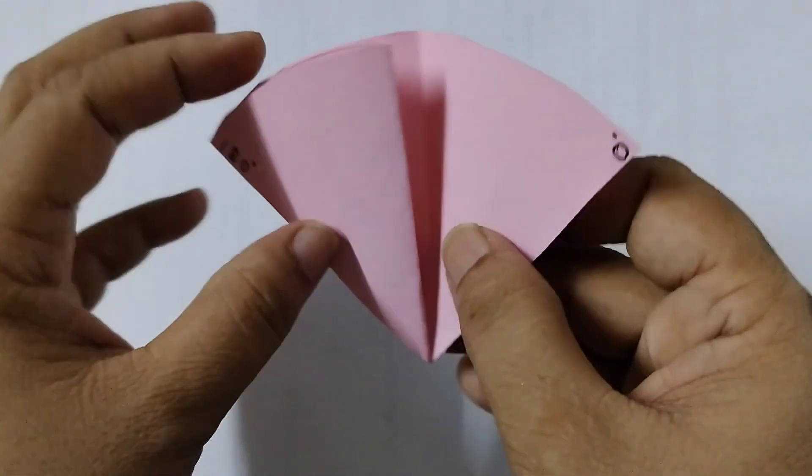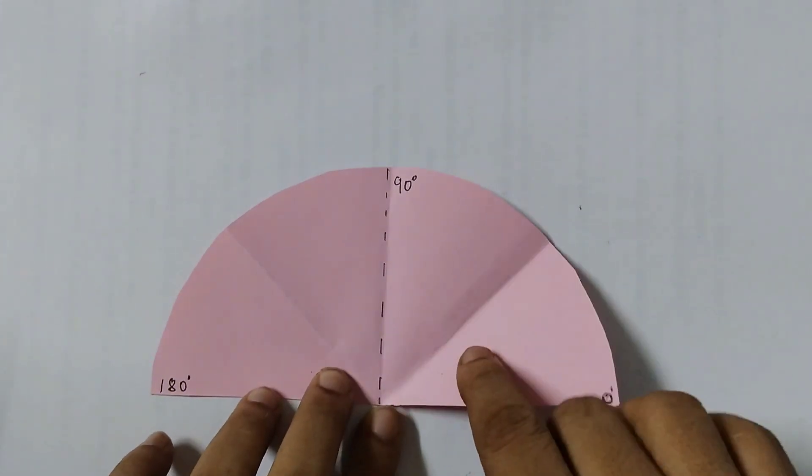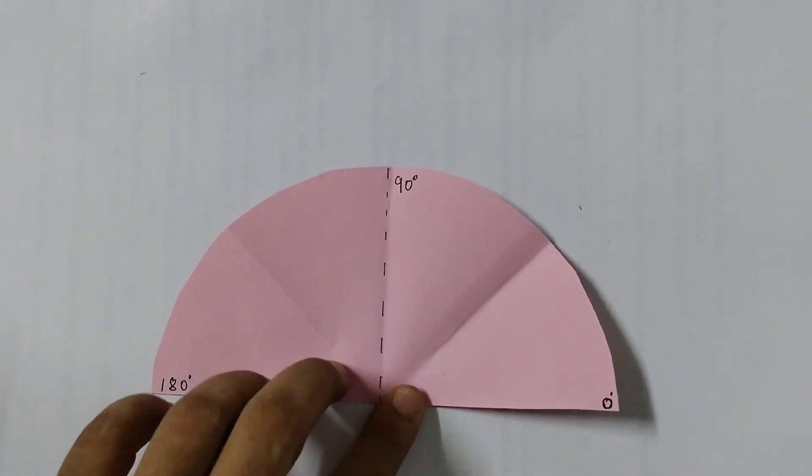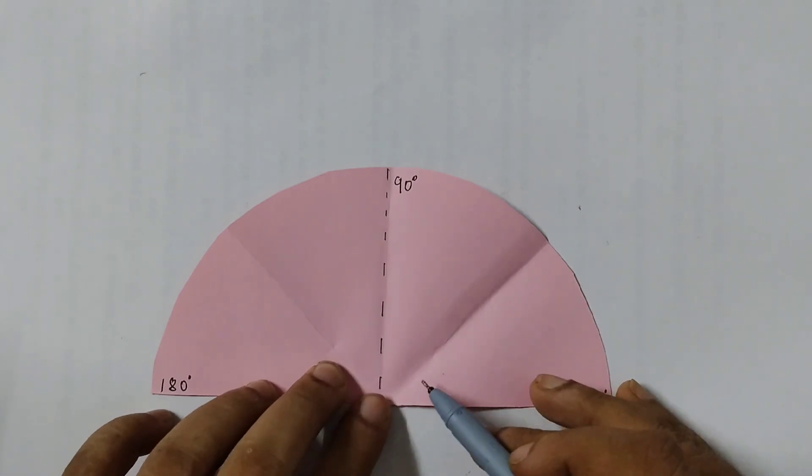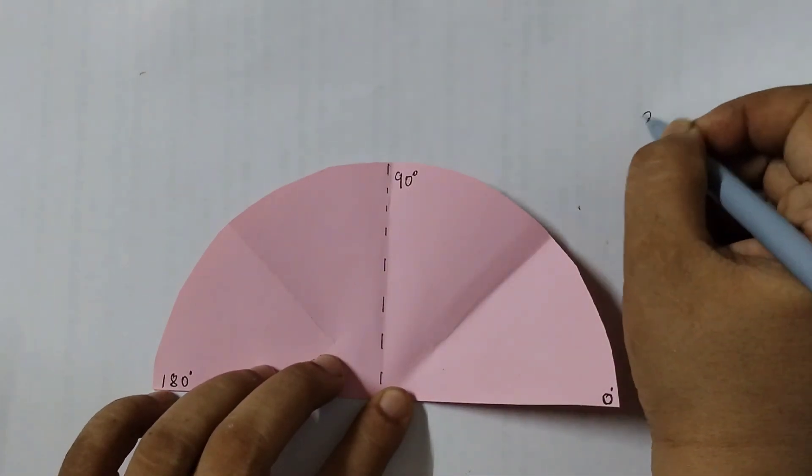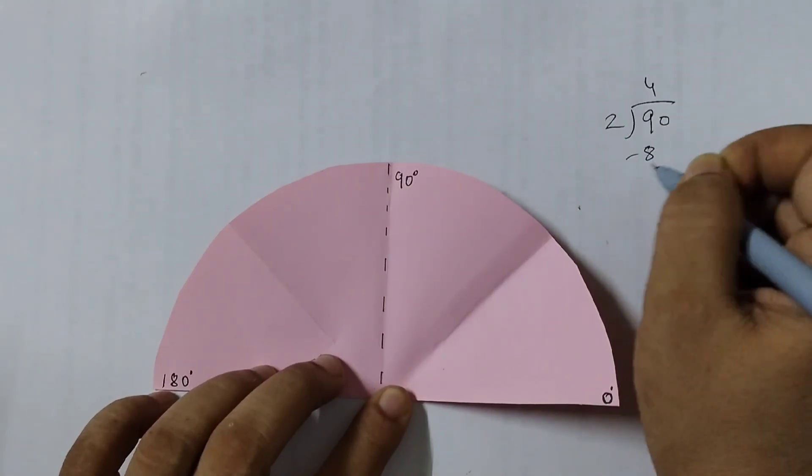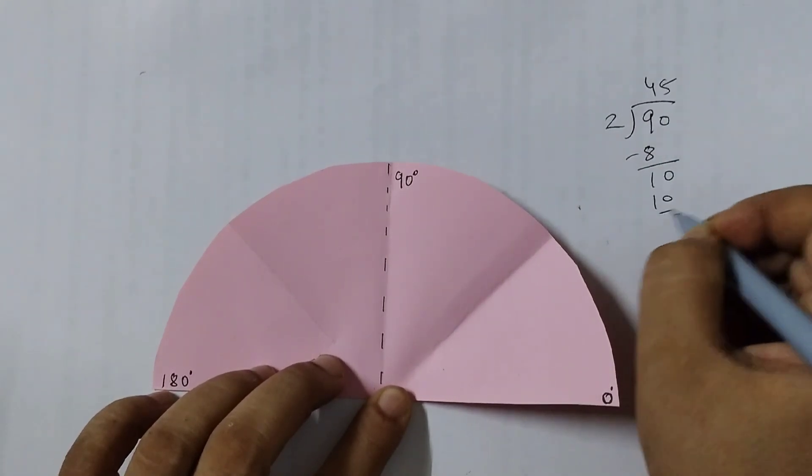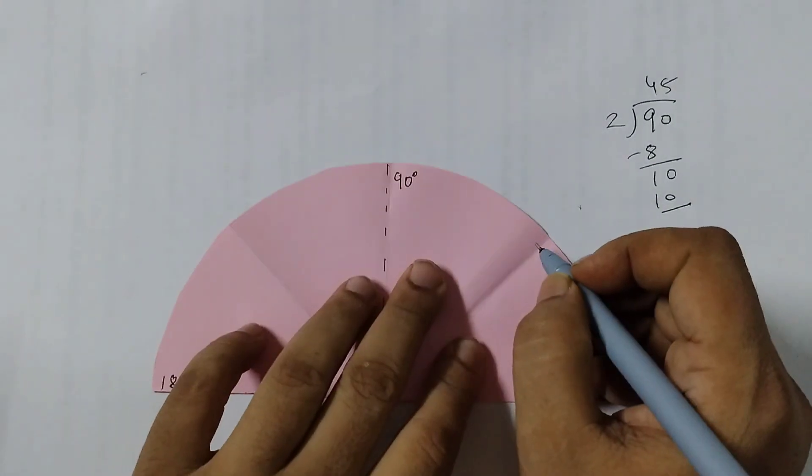Now when we open it up, we will see that we have got four angles: one, two, three, four. Now what is the measure of this angle? This is a 90 degrees angle and this is half of 90 degrees. So half of 90 degrees would be 45 degrees. That means this is going to be 45 degrees angle.